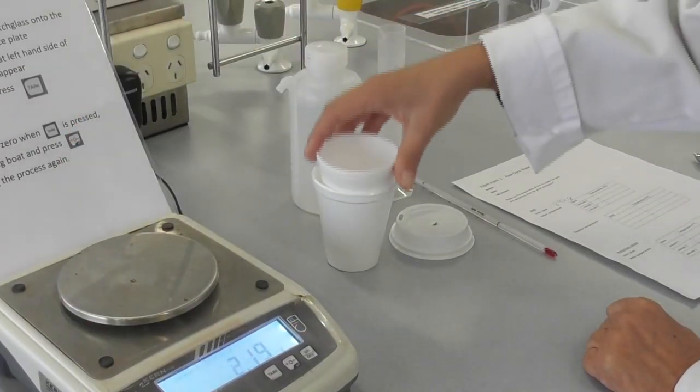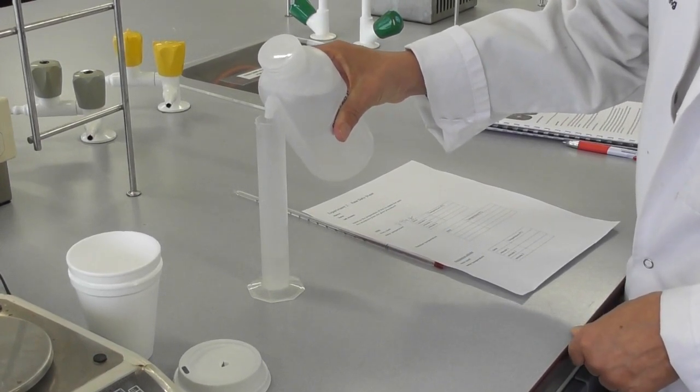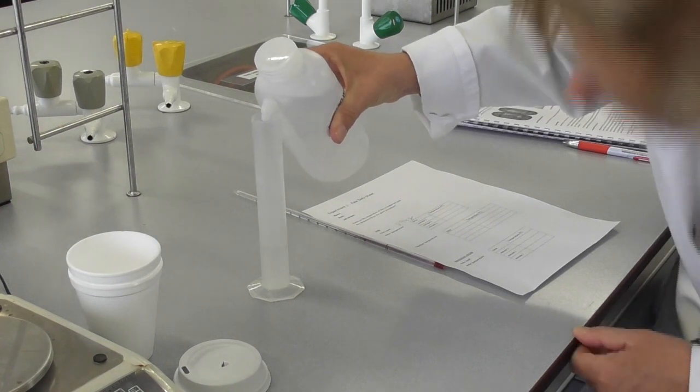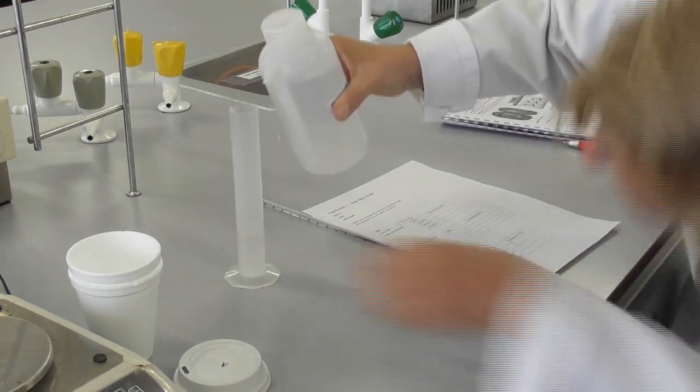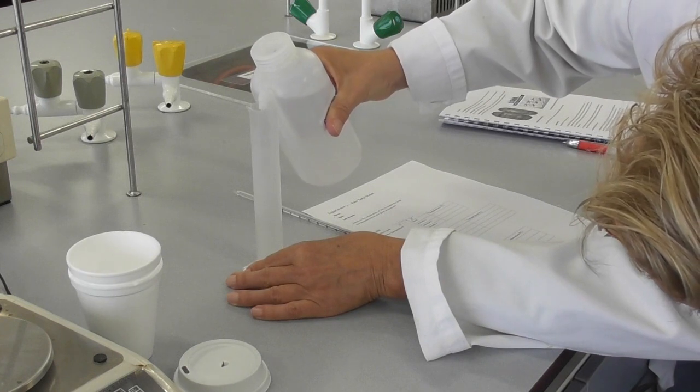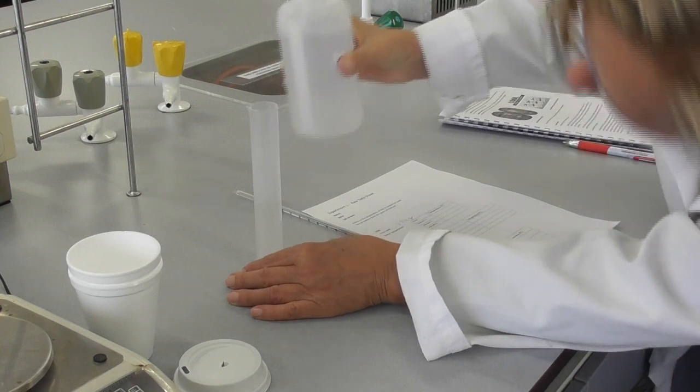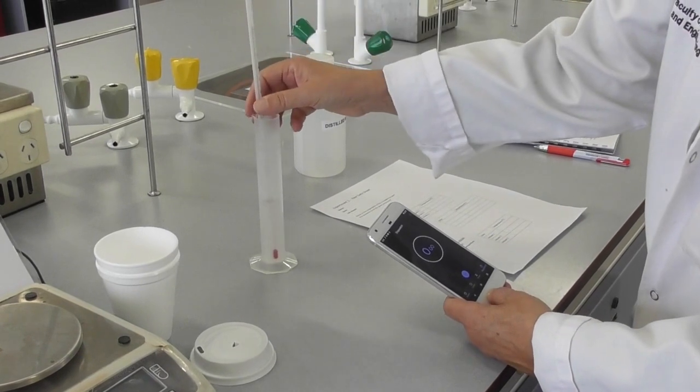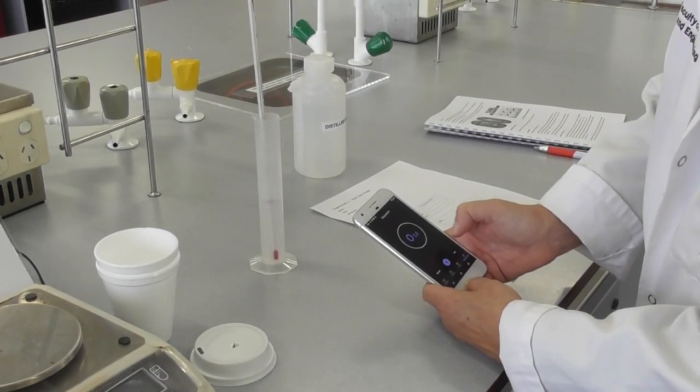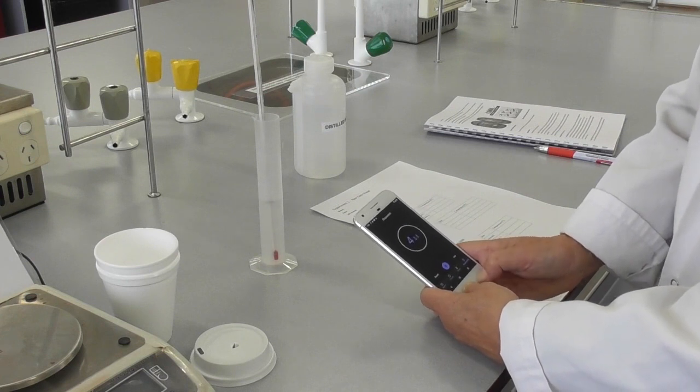We add the cup into a second styrofoam cup. Next, we measure out 30 milliliters of water into a graduated cylinder. We add a thermometer into the cylinder and start the timer.